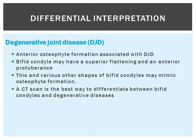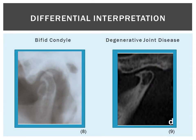Next is degenerative joint disease. With degenerative joint disease, there is often an anterior osteophyte formed — a small beak on the anterior of the condylar head. Sometimes bifed condyles can look similar on a pantomograph, as there are so many various shapes a bifed condyle can have that they can sometimes look like osteophyte formation. A CT scan has been recommended as the best way to differentiate between bifed condyles and degenerative joint disease. The radiograph on the right shows degenerative joint disease with anterior osteophyte formation, and the one on the left shows a bifed condyle that could almost be mistaken for degenerative joint disease if not examined carefully.